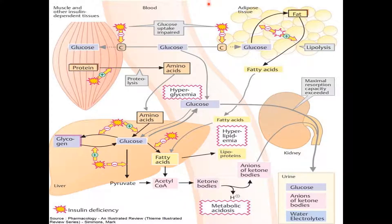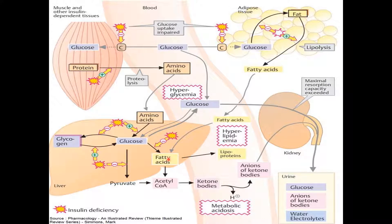In this diagram, we can see that insulin has different effects at various sites within the body. Starting in the adipose tissue, without insulin, lipolysis occurs, leading to a production of fatty acids that then travel to the liver. In the liver, these fatty acids undergo beta-oxidation, resulting in the production of ketones, specifically acetone, acetoacetate, and beta-hydroxybutyrate.